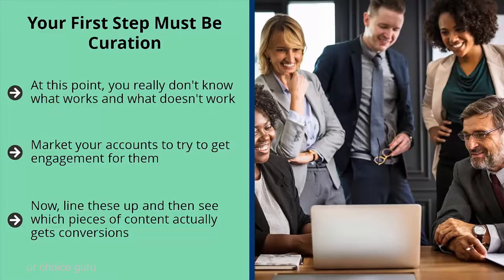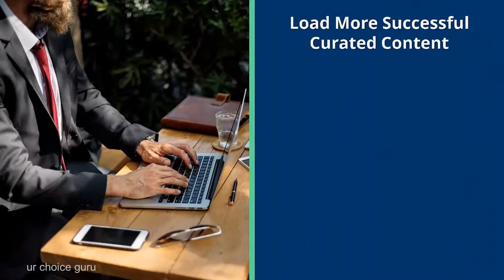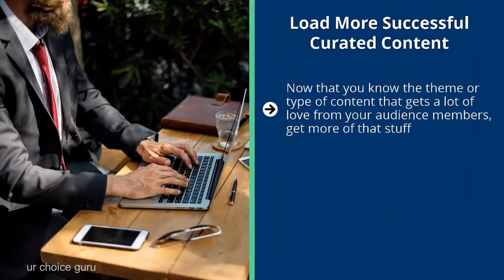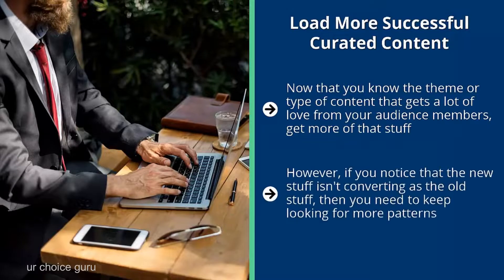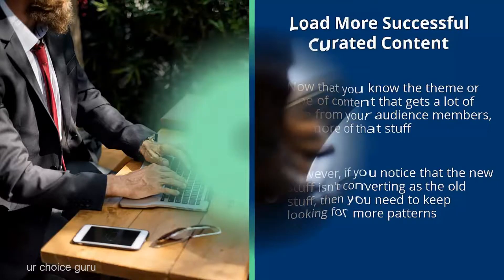Once you've seen the results from your curated content, zero in on the specific types of content that generate the results you're looking for. Load more successful curated content to see if the pattern holds. If it does, you're on to something and can move forward. If the new stuff isn't converting like the old stuff, keep looking for patterns — the initial success may have been a statistical blip. Given enough time you should be able to see key patterns regarding the type of content that generates the most engagement, conversions, or clicks.